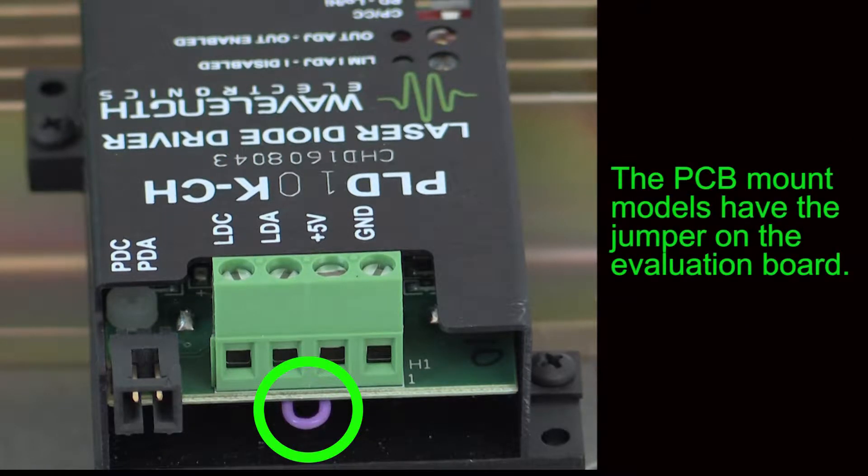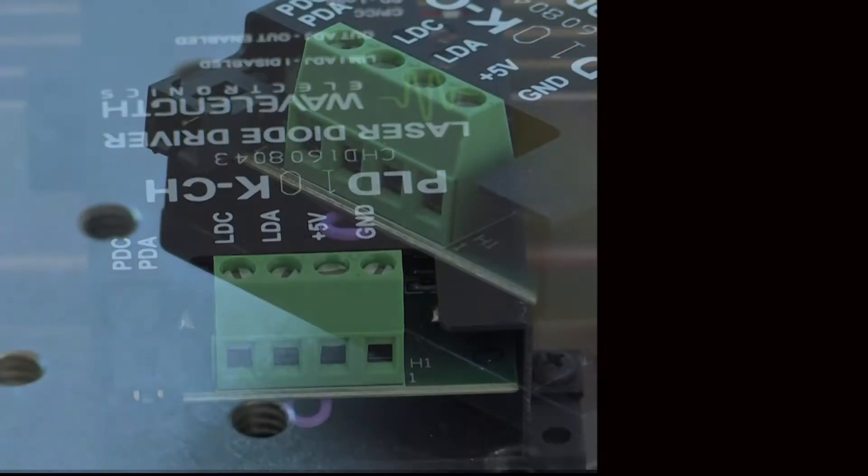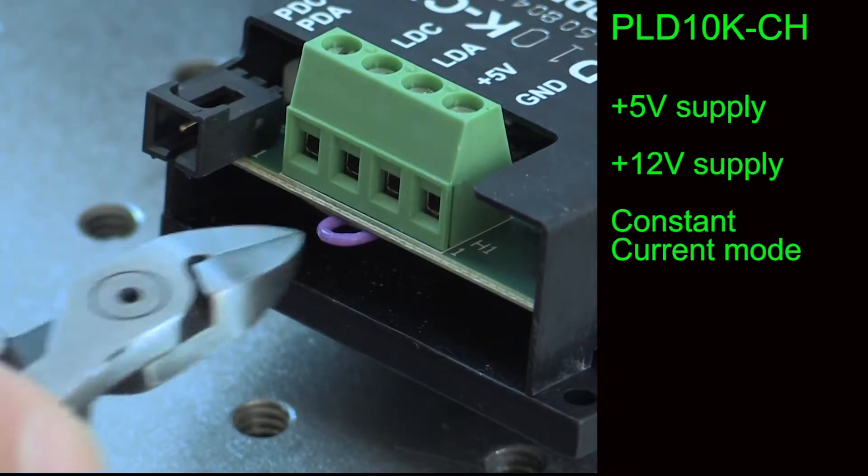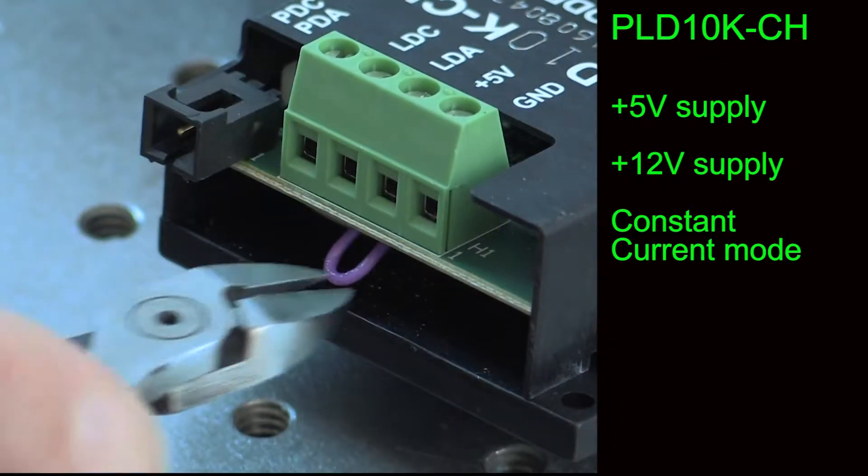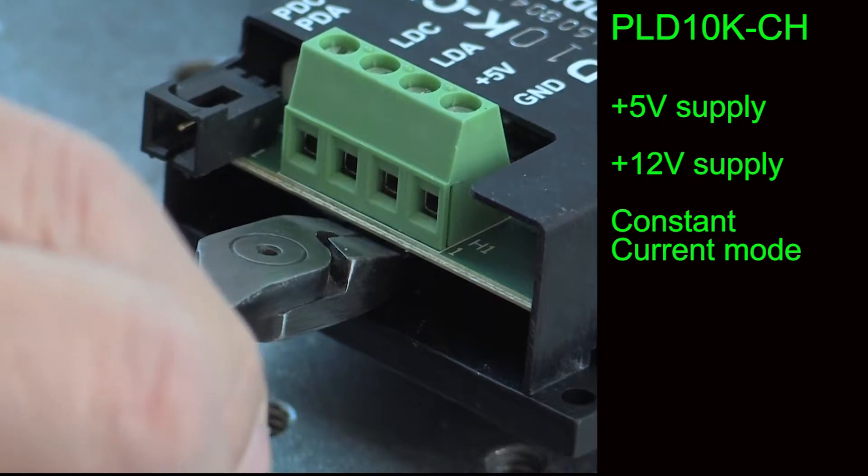For the PCB mount PLD drivers, the jumper is included on the evaluation boards. For our example, we will operate at a higher compliance voltage, so we will remove the jumper. Clip the jumper close to the pads on the circuit board.